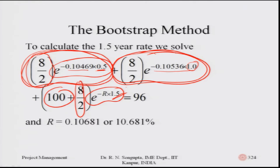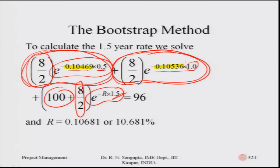The r value comes out to be 10.681. So we now have: 10.469 as the continuous compounding interest rate for half a year, 10.536 for one year, and 10.681 for one point five years.